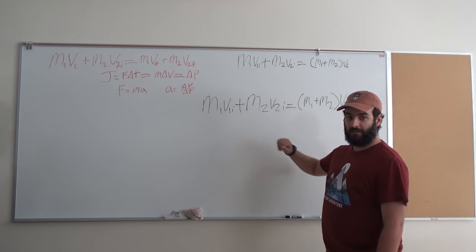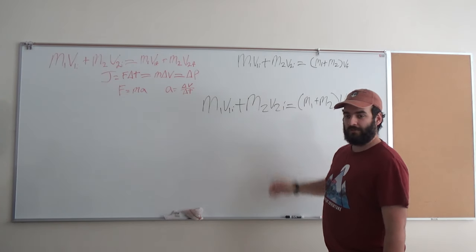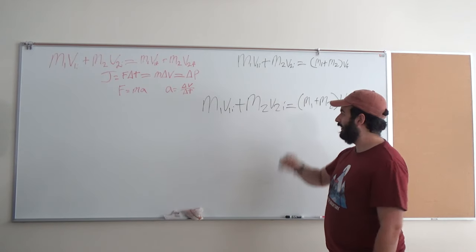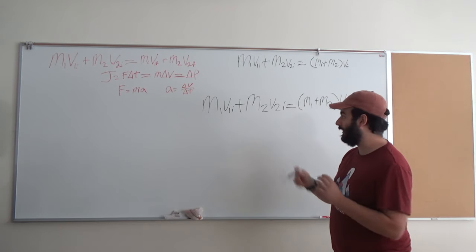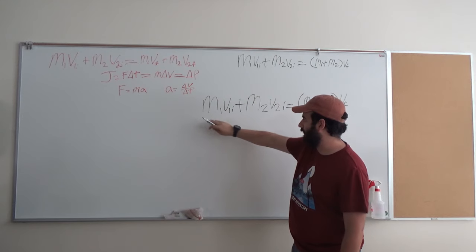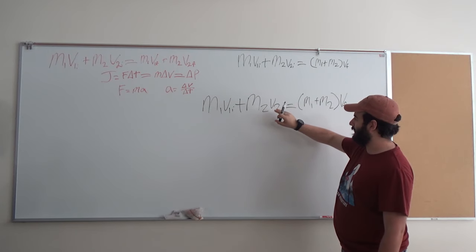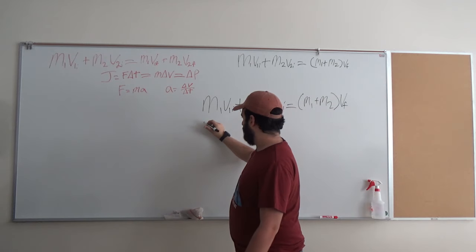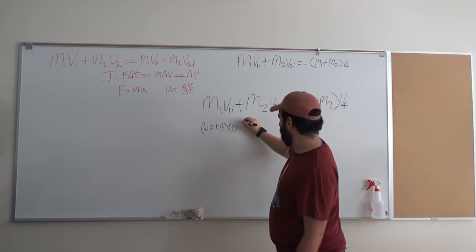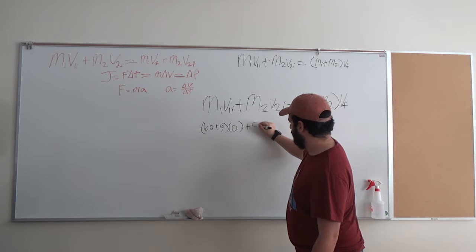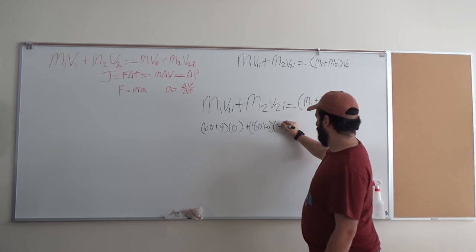Now I'm back with the second equation. This is for the inelastic collision equation. What this is representing, as Matt mentioned, is when two hockey players come together and then stay together. We're going to use the same numbers we did last time. These represent the same things as before: mass of the first person, initial velocity of the first person, plus mass of the second person times the initial velocity of the second person. The first person, we said, was 60 kilograms times their initial velocity, which was zero. Plus mass of the second person, a little heavier at 80 kilograms, times their velocity, which was 5 meters per second.